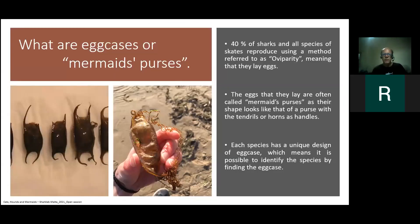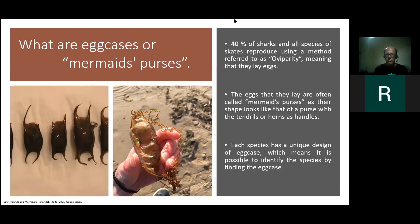We often refer to egg cases as mermaid purses. When we think about shark and skate egg cases, actually 40% of all shark species reproduce using a method referred to as oviparity — basically meaning they lay eggs. The eggs are often called mermaid purses as their shape looks a little like a purse, with the tendrils or horns looking like handles. Each species has a unique design of egg case, which means it is possible to identify the species by finding the egg case — whether washed up on the beach or seen in the sea.